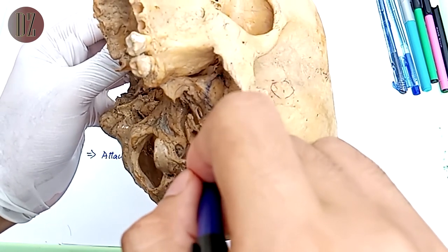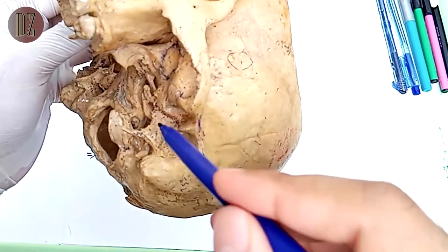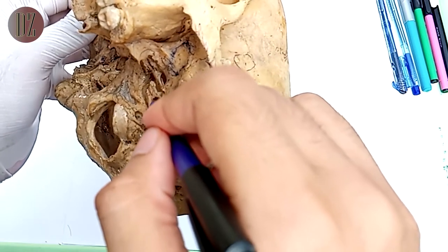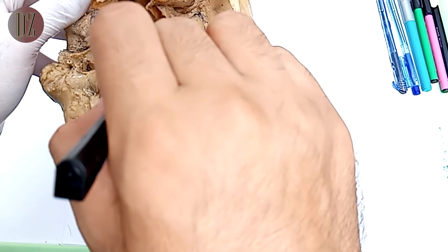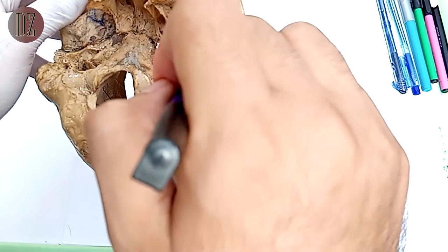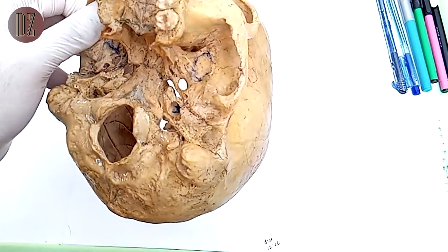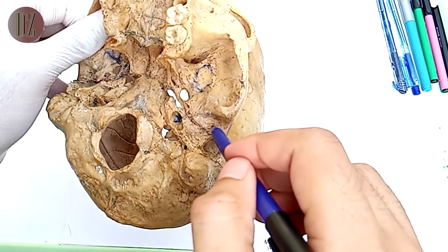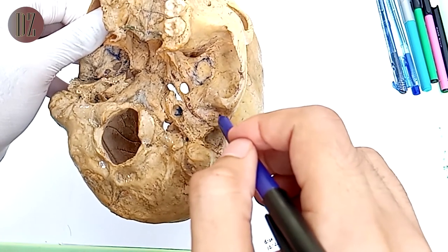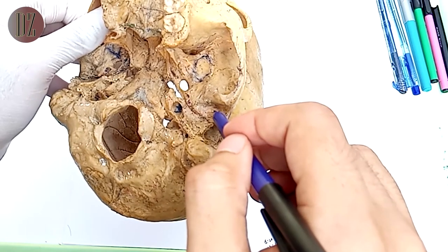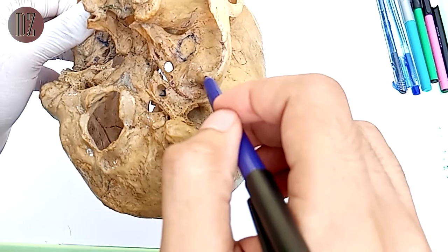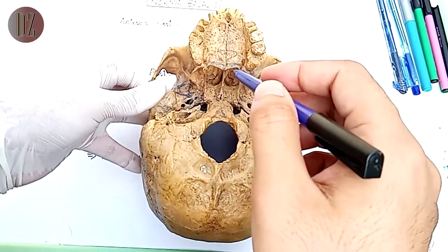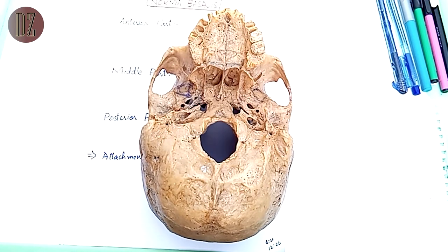The upper border of the tympanic plate forms the pterygotympanic fissure. Medial to the tympanic plate is the carotid canal. Internally the tympanic plate is fused with the petrous part of the temporal bone. The squamous part of the temporal bone possesses the articular fossa, which articulates with the head of the mandible forming the temporomandibular joint. The articular tubercle is continuous with the anterior root of the zygoma. These are the complete bony features of the middle part of Norma Visalis; its attachments will be covered in the next video.